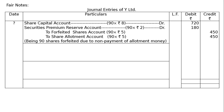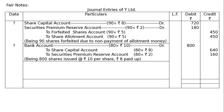Forfeited Shares Account credited: 90×₹5 = ₹450 (amount collected on application only). Share Allotment Account credited: 90×₹5 = ₹450 (allotment amount including capital ₹3 plus premium ₹2, due but not collected). Narration: Being 90 shares forfeited due to non-payment of allotment money.